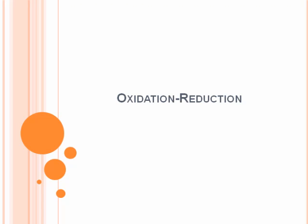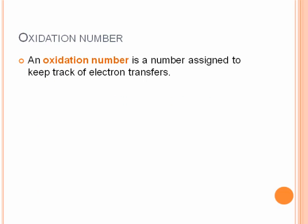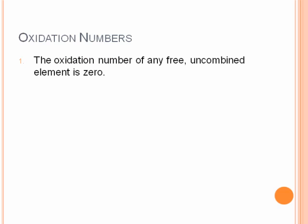This is a brief look at oxidation-reduction reactions and calculation of oxidation numbers. An oxidation number is a number assigned to keep track of the electron transfers that occur during oxidation-reduction reactions. Here are some rules governing the calculation of oxidation numbers.